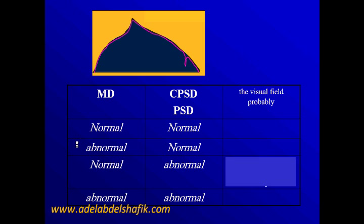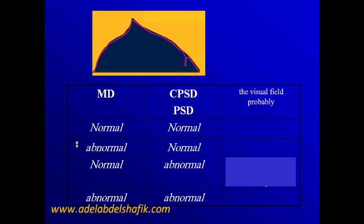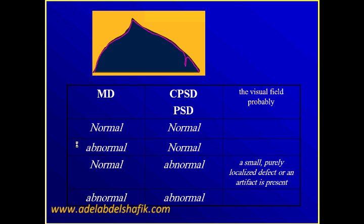Scenario three: the mean deviation is normal while the pattern standard deviation is abnormal. It means the whole field is high but just one location is depressed. That one location will show up in the pattern standard deviation but will not affect the mean because it is only one point in 70 or 50 — so it means a localized affection in one area.